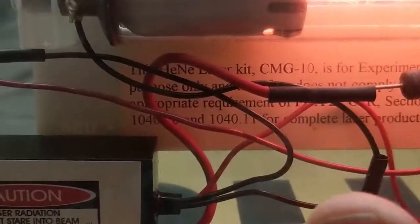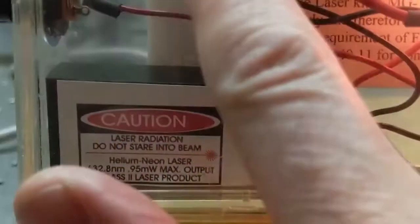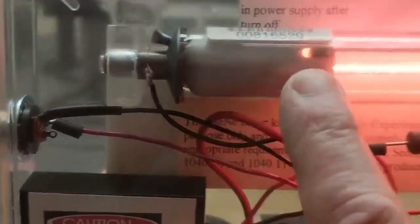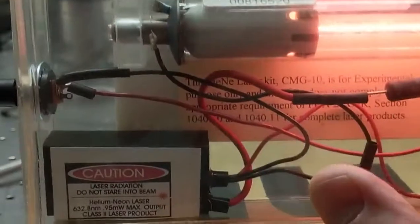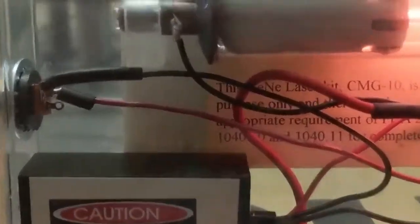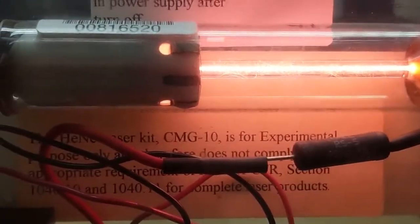The voltage is being applied between this end and this end, creating the plasma inside, the little thin stream of plasma. It's probably pretty thick glass, and that's why the stream of plasma looks so thin compared to the diameter of the glass.